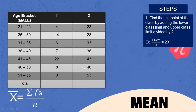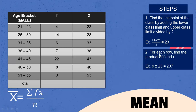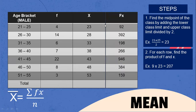Next, for each row, find the product of F and X. So: 4 times 23 is 92; 14 times 28 is 392; 6 times 33 is 198; 7 times 38 is 266; 22 times 43 is 946; 8 times 48 is 384; 3 multiplied by 53 is 159.